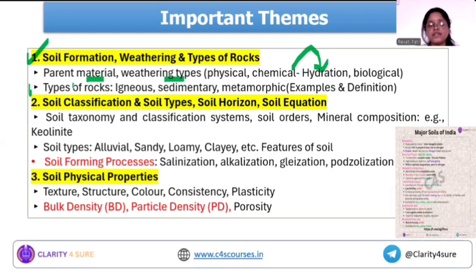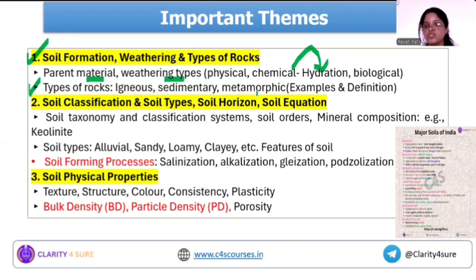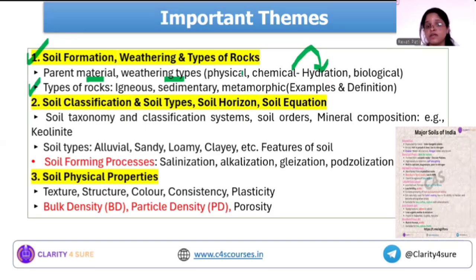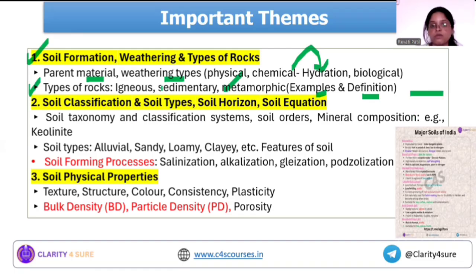Types of rock: igneous, sedimentary, and metamorphic. Have a basic understanding of examples — granite, basalt, intrusive and extrusive igneous rocks. For metamorphic rocks, limestone gets metamorphosed into marble — there are five to six such examples that become important. There was a PYQ question on sedimentary rocks — definitions are given and you need to identify which rock is being described.